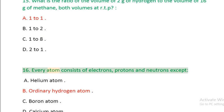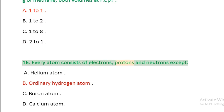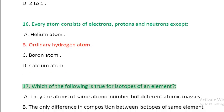Question 16: Every atom consists of electrons, protons and neutrons except: A. Helium atom, B. Ordinary hydrogen atom, C. Boron atom, D. Calcium atom.